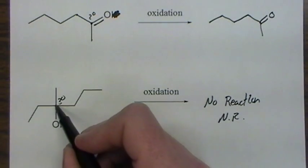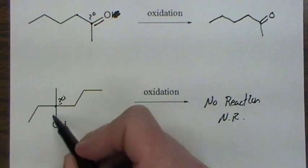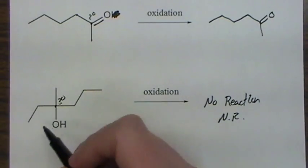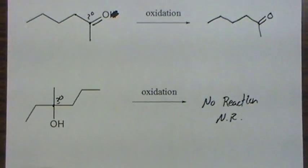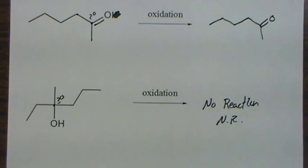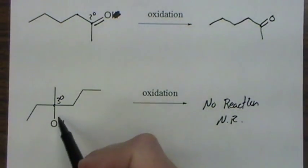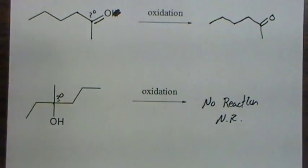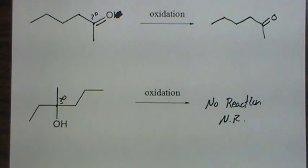This already has four bonds to it. Getting rid of that hydrogen and trying to put another bond would make five bonds. So when you try to oxidize a tertiary alcohol, no reaction. Those are the three possibilities: either get an aldehyde, a ketone, or no reaction.